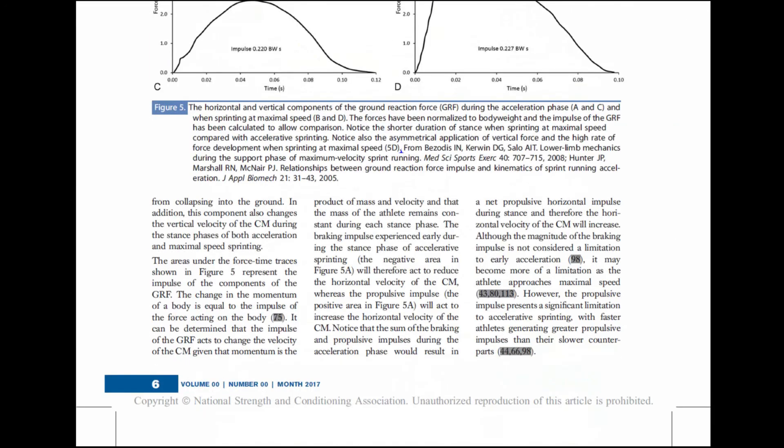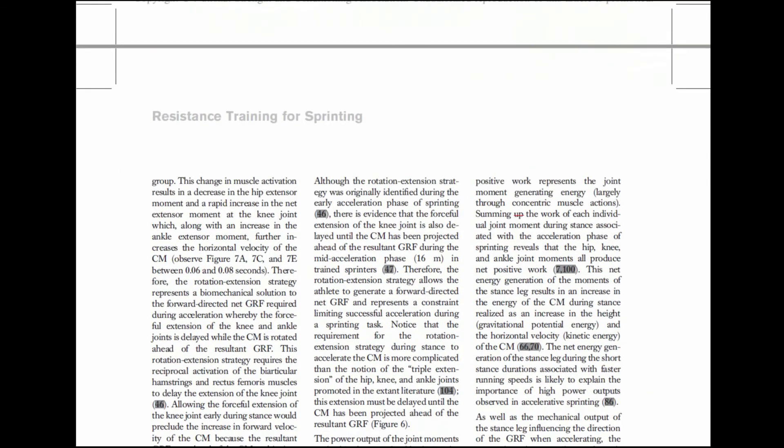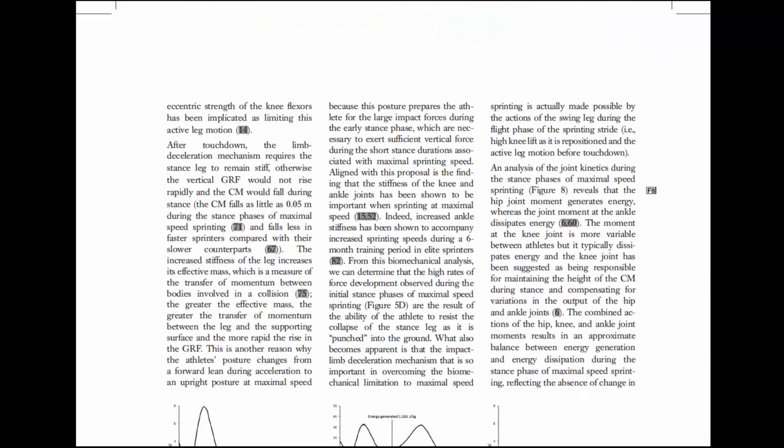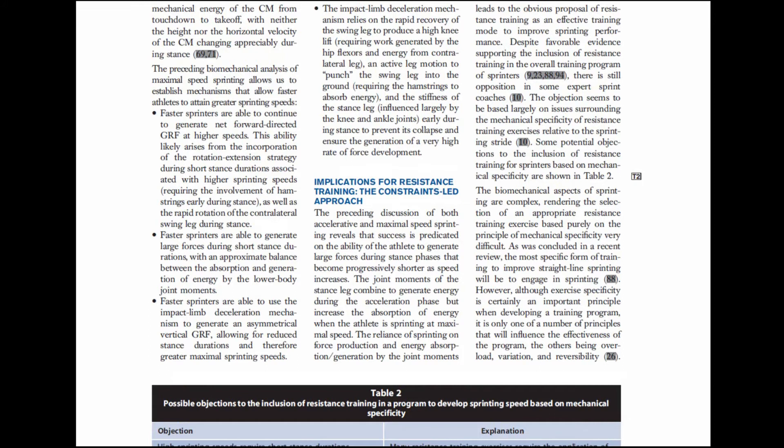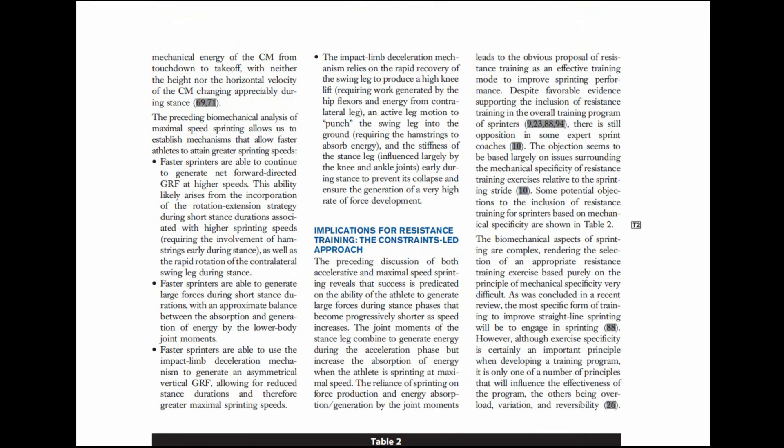How can we use the constraints-led approach to get a better idea of how we can implement resistance training methods to improve sprinting speed? Because the mechanisms that we've identified all seem to be related to the ability of the athlete to generate sufficient forces in short periods of time.